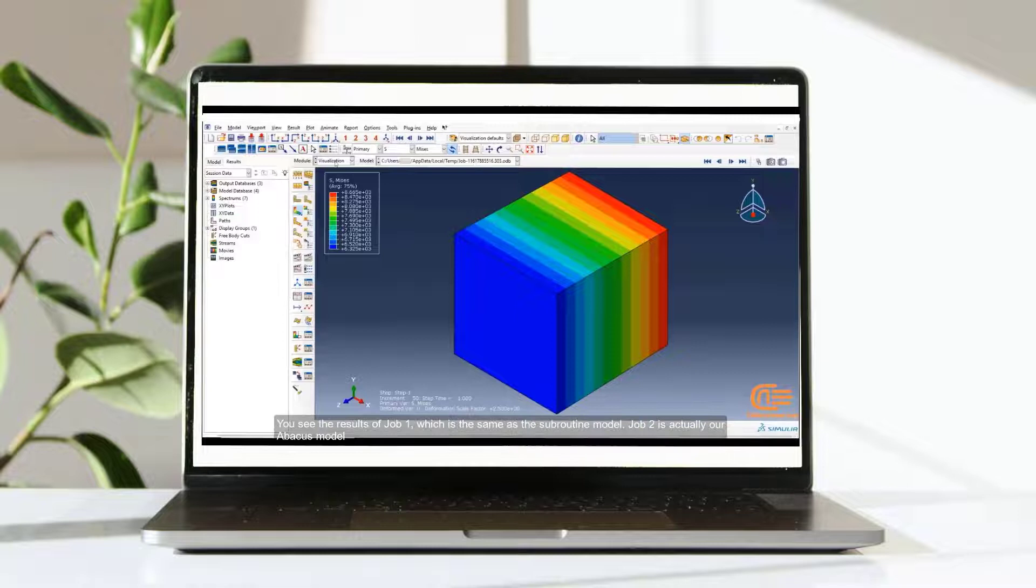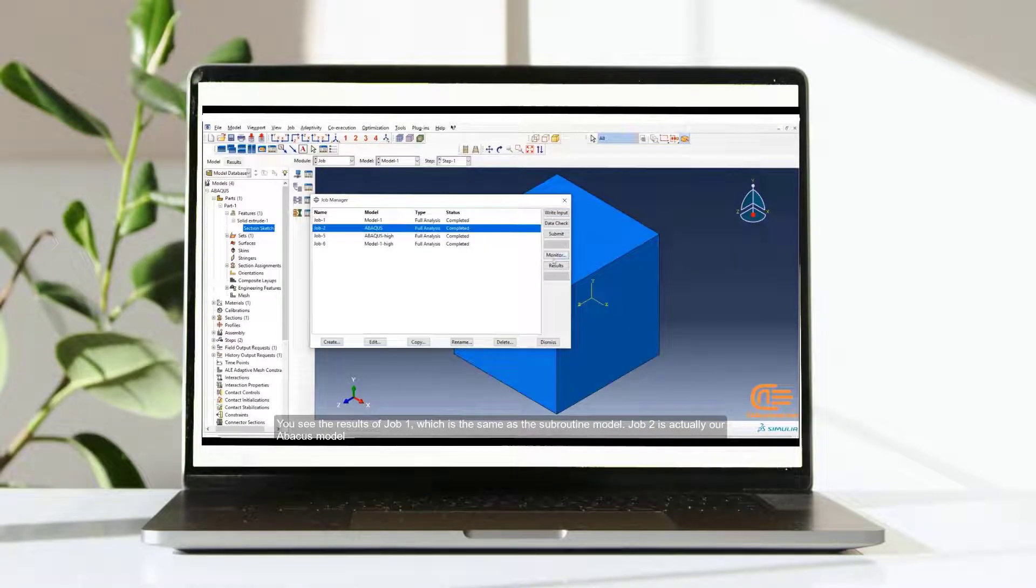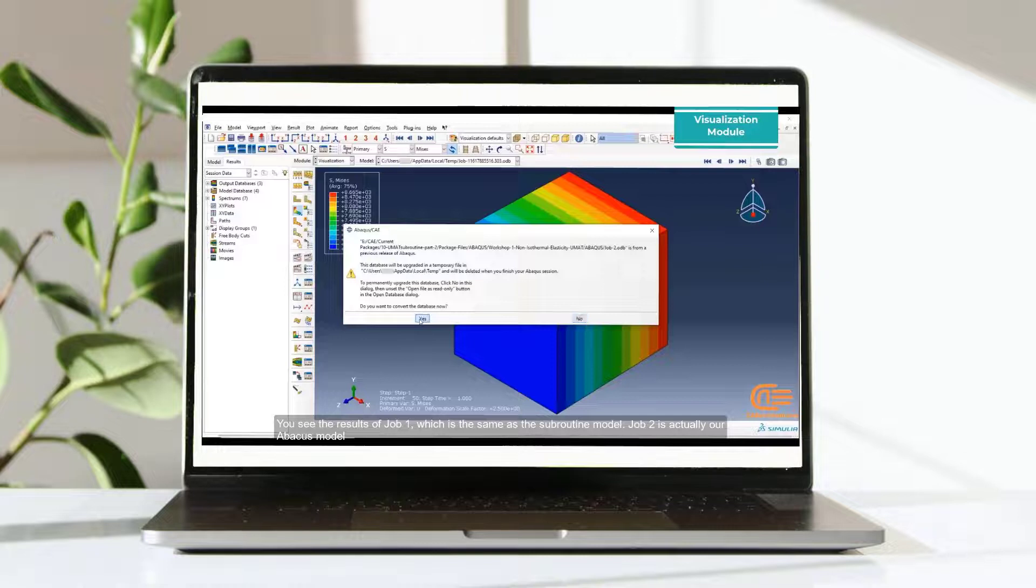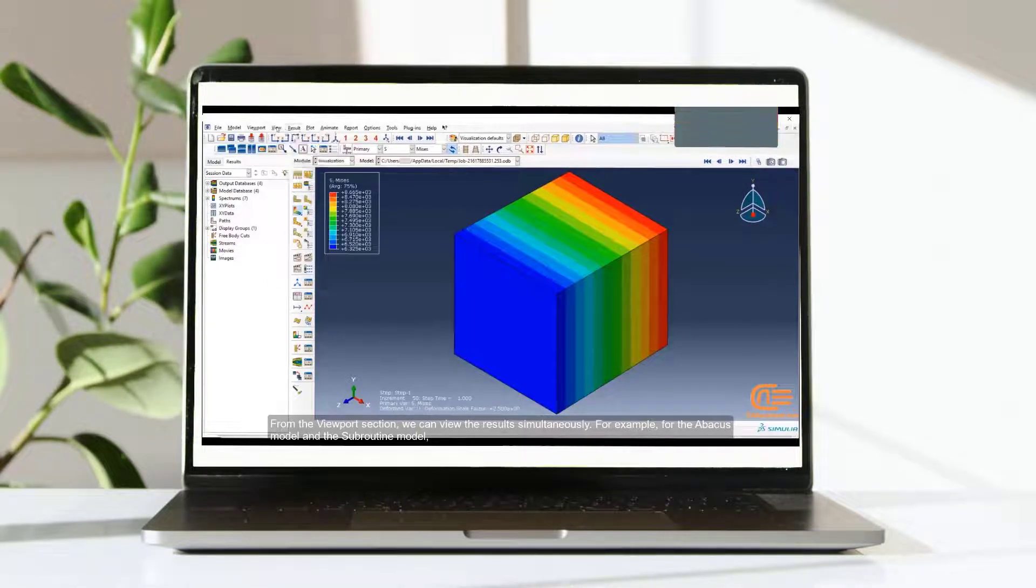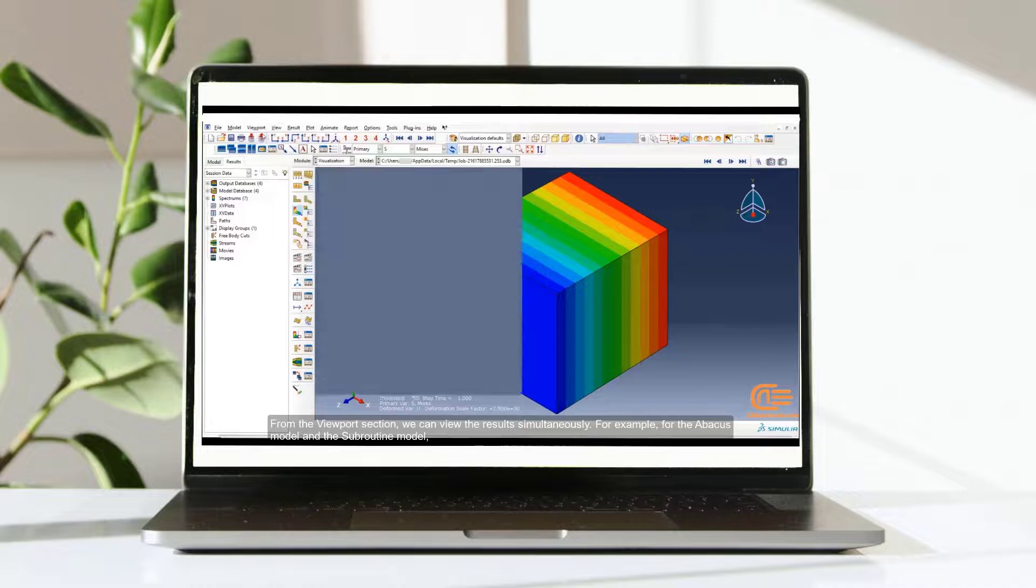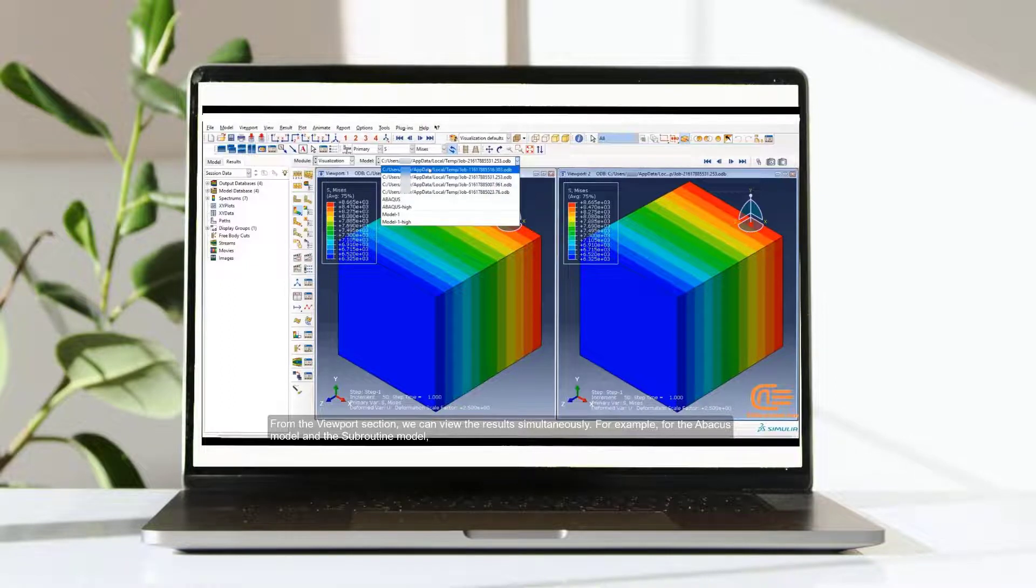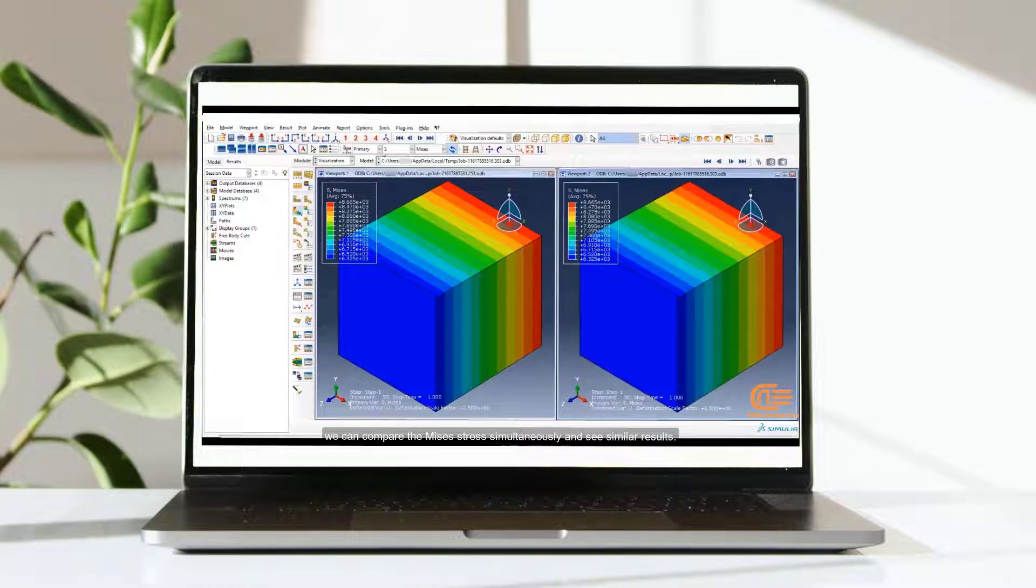You see the results of job 1, which is the same as the subroutine model. Job 2 is actually our Abacus model. From the viewport section, we can view the results simultaneously. For example, for the Abacus model and the subroutine model, we can compare the Mises stress simultaneously and see similar results.